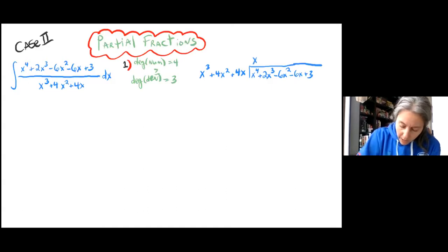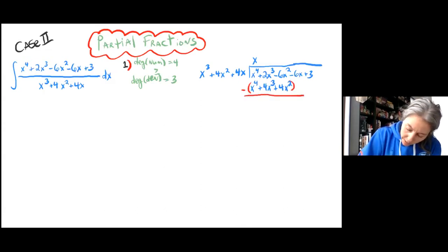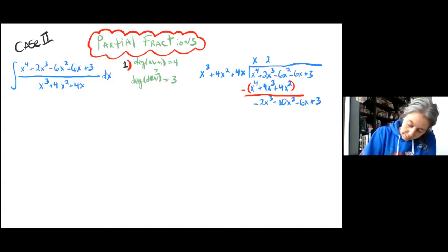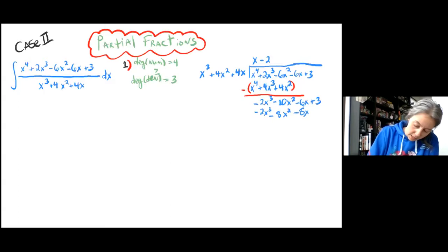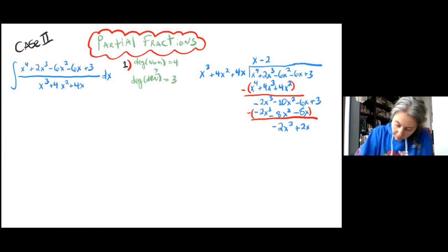So x to the 4th — we'll have an x here. x to the 4th plus 4x cubed plus 4x squared, which we subtract to get minus 2x cubed minus 10x squared minus 6x plus 3. Then minus 2 up here comes down to minus 2x cubed minus 8x squared minus 8x. Again, we subtract that to give us negative 2x squared plus 2x plus 3.